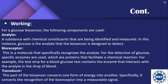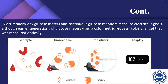Proteins facilitate a chemical reaction for a specific enzyme. For example, the test strip for a glucose test contains the enzyme that interacts with the analyte in the drop of blood. The transducer is the part of the biosensor that converts one form of energy into another — specifically, it converts the recognition signal of the bioreceptor into a measurable signal.